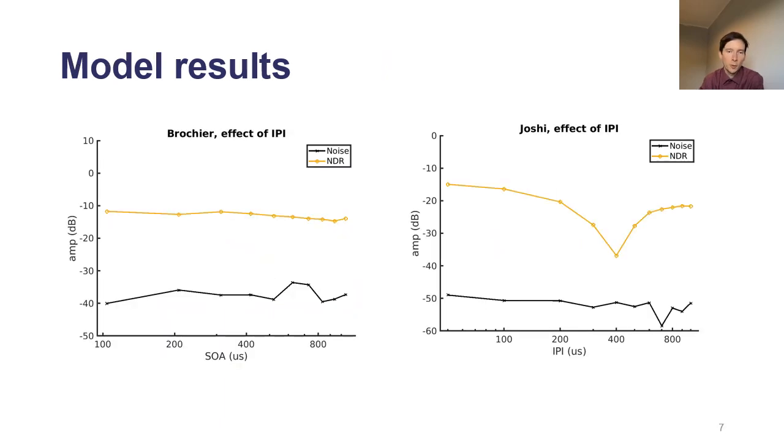These are the results obtained in both models. The black line is the noise floor and the yellow line is amplitude of the model neural response at 40 Hz. You can first see that both models do create a distortion at 40 Hz.